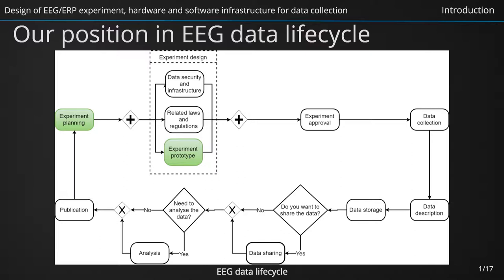The main goal of the planning phase is to establish a plan on how to collect, store, annotate, manage, and share the data throughout the life cycle. This phase, of course, overlaps to a large extent with the experiment design phase that results in an experiment prototype.